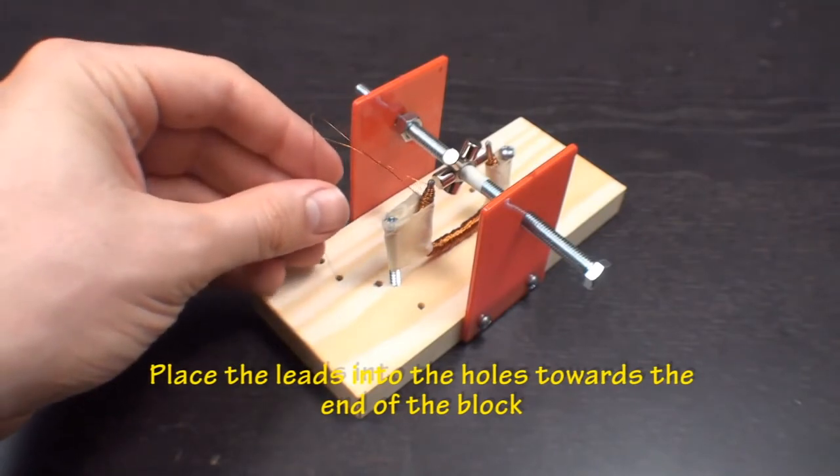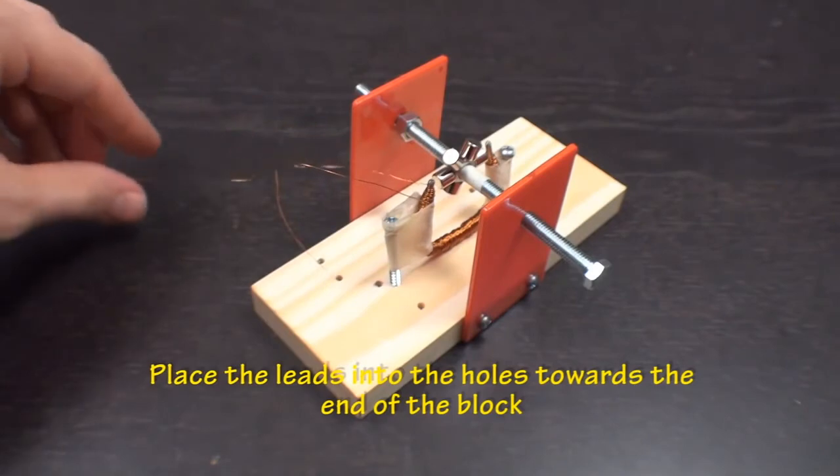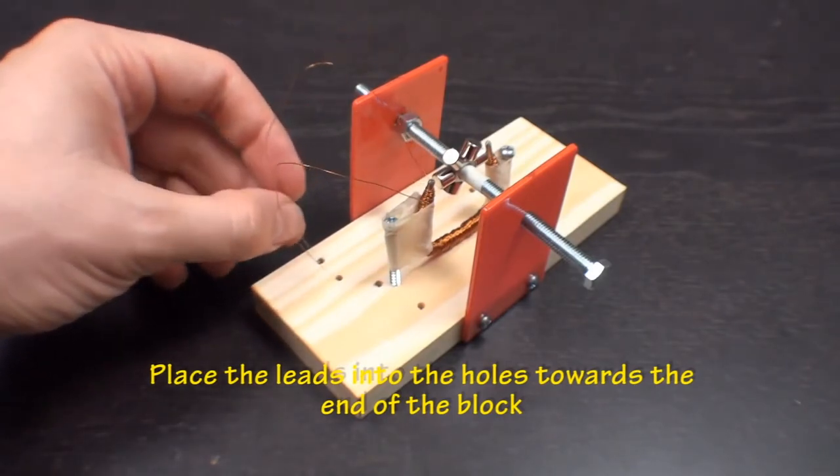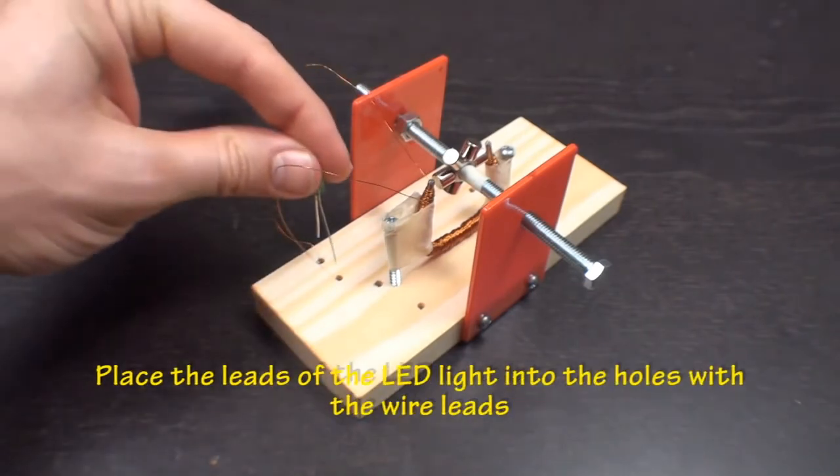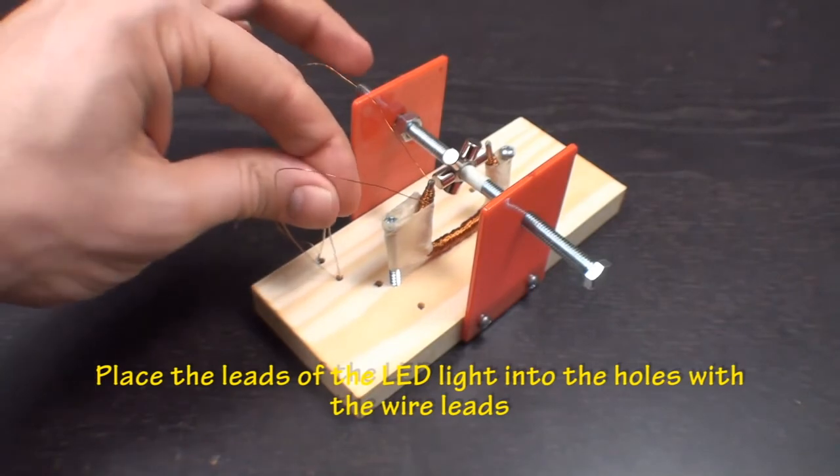Place the leads into each of two holes at the end of the wood block. Now take an LED and place each one of its leads into the holes with the magnetic wire.